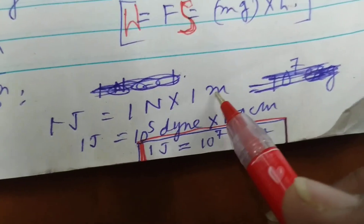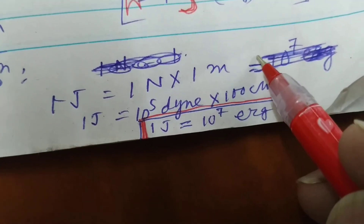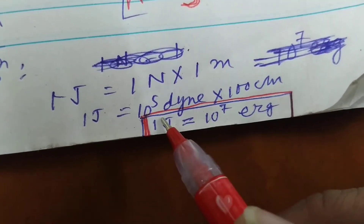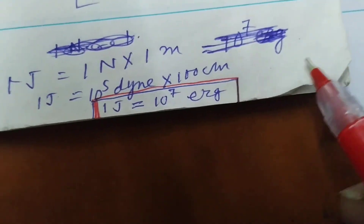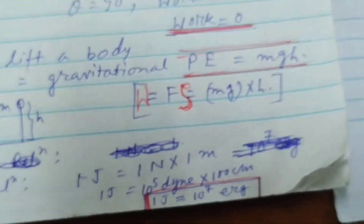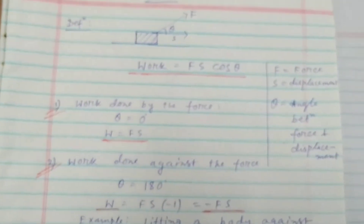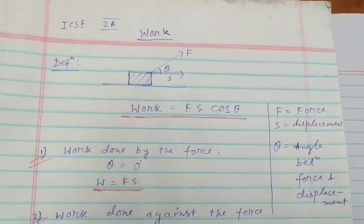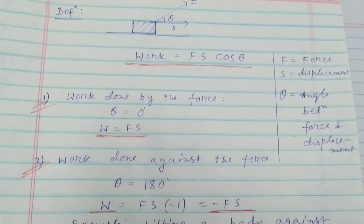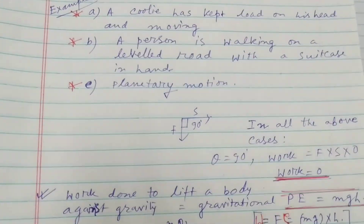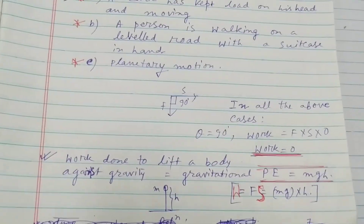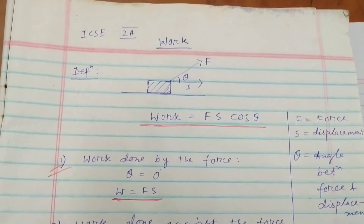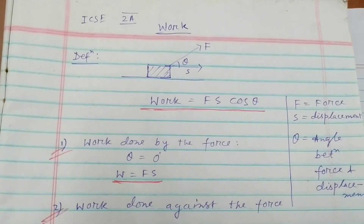The relation between joule and erg: one joule equals one newton times one meter. One newton is 10 to the power 5 dynes, and one meter is 100 centimeters, therefore one joule equals 10 to the power 7 ergs. This concludes the discussion of work, which is the first part of chapter 2 in ICSE physics. I hope you will be benefited by my discussion. Please like and subscribe to my channel. Thank you.